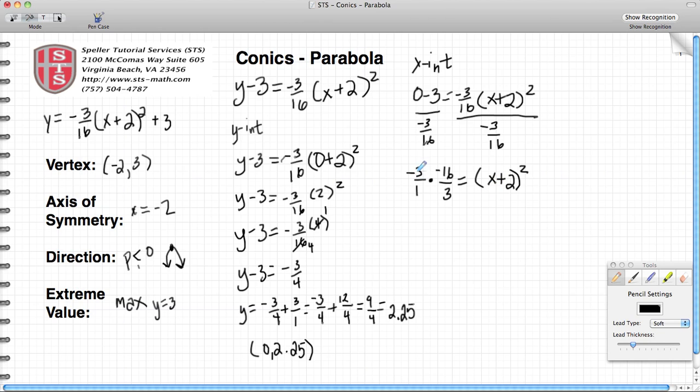I notice here that I can simplify these fractions. I know that negative 3 and 3 have a common factor of 3. So negative 3 divided by 3 gives me negative 1, and 3 divided by 3 gives me 1.